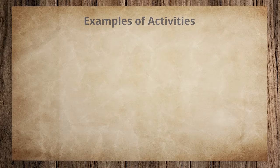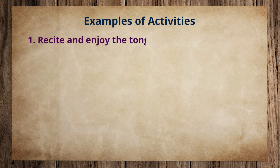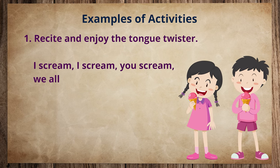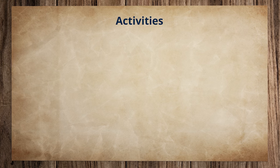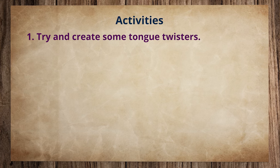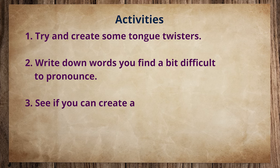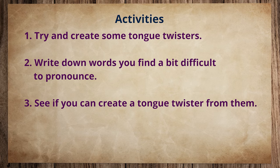Now I will share a few examples of activities. The first one is: recite and enjoy the tongue twister — 'I scream, I scream, you scream, we all scream for I scream.' It is a simple one, but you can give other difficult ones to students. Ask students to try and create some tongue twisters. Write down words you find a bit difficult to pronounce, see if you can create a tongue twister from these words, and create your own tongue twister — it will be fun.